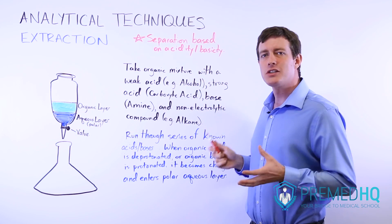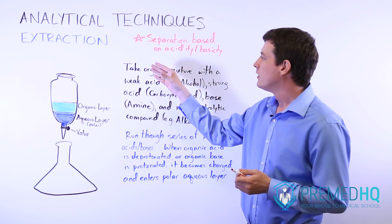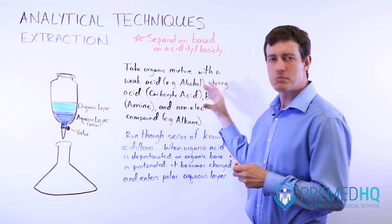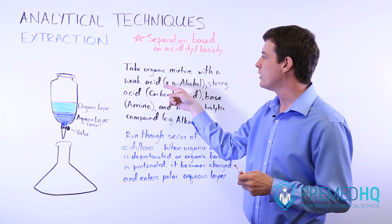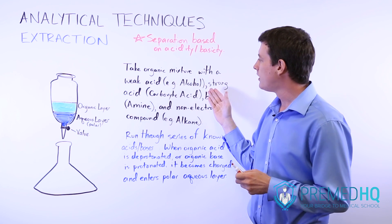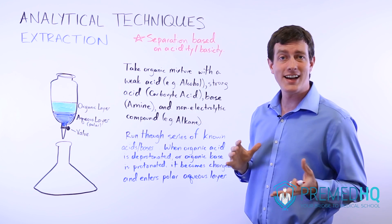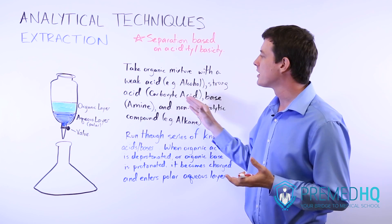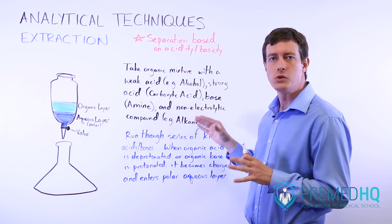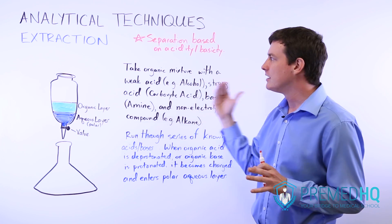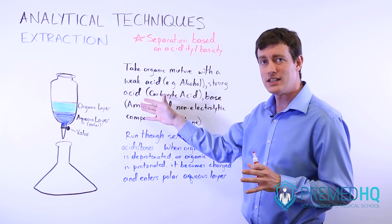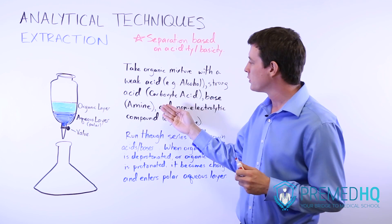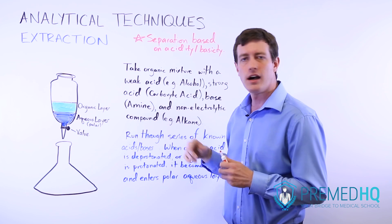Essentially what you do with extraction is you have some mixture of organic compounds that have to be fairly specific. One of them will likely be a weak acid like an alcohol, one of them will be a strong acid — something like a carboxylic acid. In fact, carboxylic acid is your go-to strong organic acid that you'll almost always see in every extraction. And a base that is organic, which will usually be an amino group.